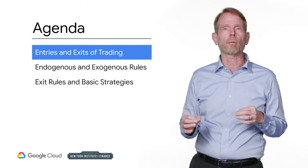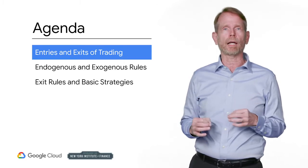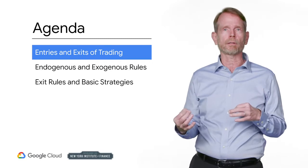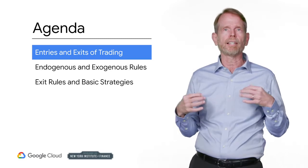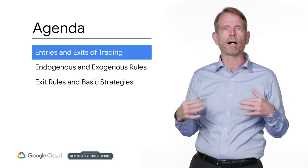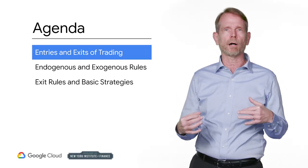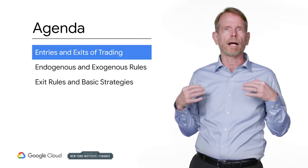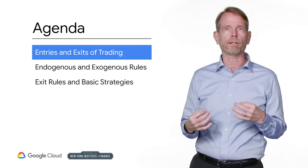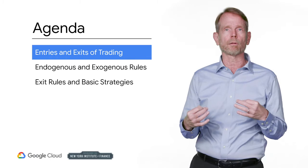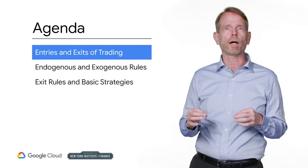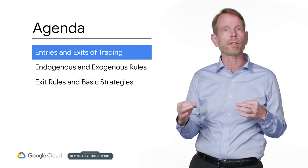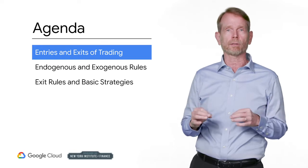To begin, let's talk about the entries and exits of trading. We'll discuss entry signals and exit signals. These are the key features that define an algorithmic trading model. In the context of algorithmic trading, this is the most important way to describe a model. In fact, you can summarize an algorithmic trading model by describing its entry and exit signals.